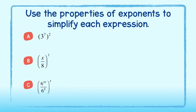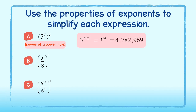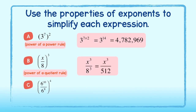Use the properties of exponents to simplify each expression below. We can apply the power of a power rule to help us simplify a. Using this rule, we multiply the exponents to get 3 to the 14th power. Completely simplified, we get 4,782,969. For b, we will use the power of a quotient rule. The power of 3 will be applied to both numerator and denominator. Simplified, we get x to the third over 512.